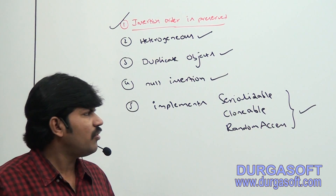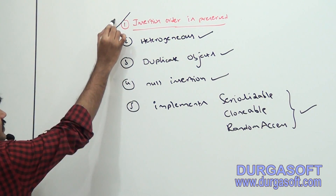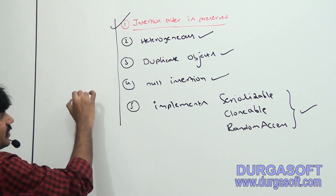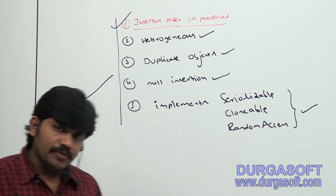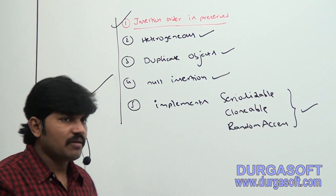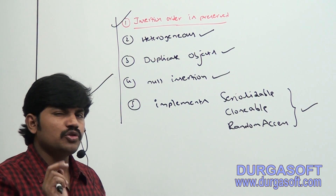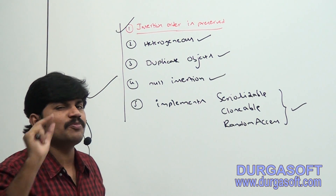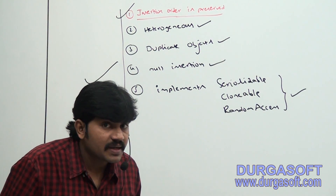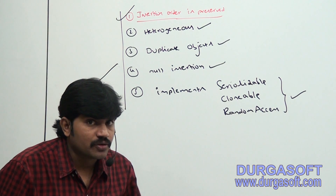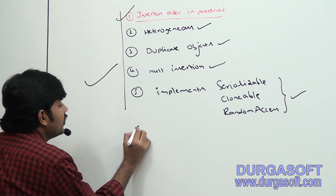All these points are the same as normal ArrayList — CopyOnWriteArrayList has all these properties the same. However, there are two specific differences because it is a concurrent collection. Those two things are very important, so take a bit of special care.